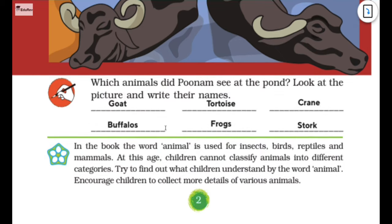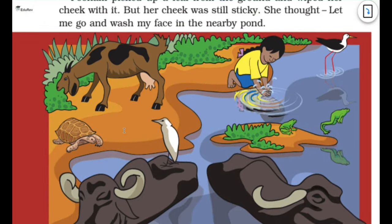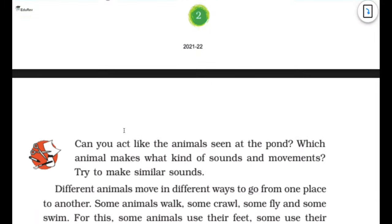So which animals did Poonam see at the pond? Look at the picture and write their names. We saw goat, buffalo, tortoise, frogs, and crane and stork. Here they have and here is a stork. So we can also see that. Let's move further.